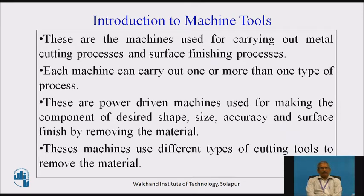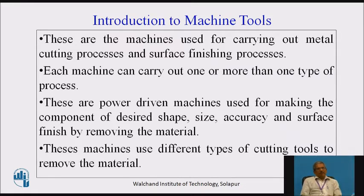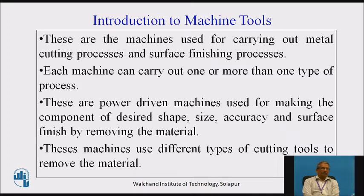Machine tools are machines used for carrying out metal cutting processes and surface finishing processes. We require material to be removed to get the desired dimensional part. To carry out material removal from raw material, we require metal or non-metal cutting processes and surface finishing according to requirement. Each machine can carry out one or more types of processes. These are power-driven machines used for making components of desired shape, size, accuracy, and surface finish by removing material.